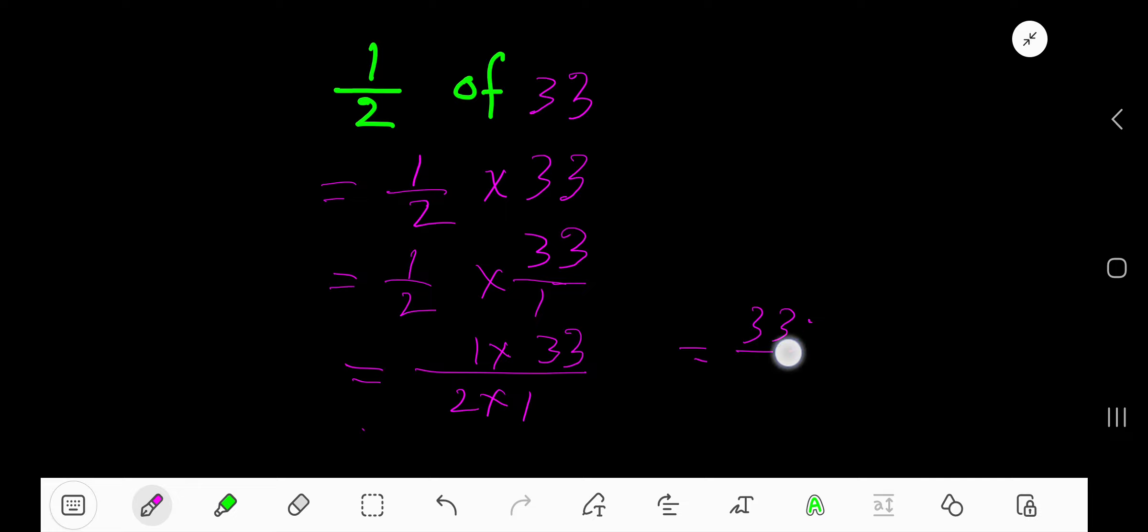So we are getting 33 divided by 2. This is an improper fraction because the numerator is greater than the denominator, so change this improper fraction to a mixed number. Divide 33 by 2. 2 goes into 3 one time, 1 times 2 is 2.